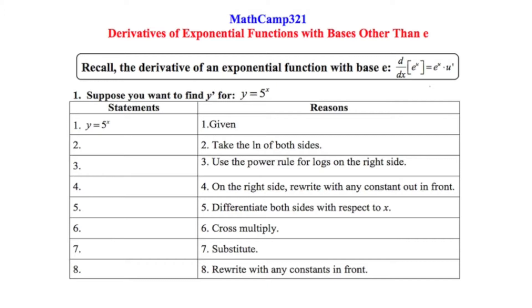We're going to structure this like a two-column proof from geometry. Suppose you wanted to find the derivative for y equals 5 to the x. So let's start with the given: y equals 5 to the x.